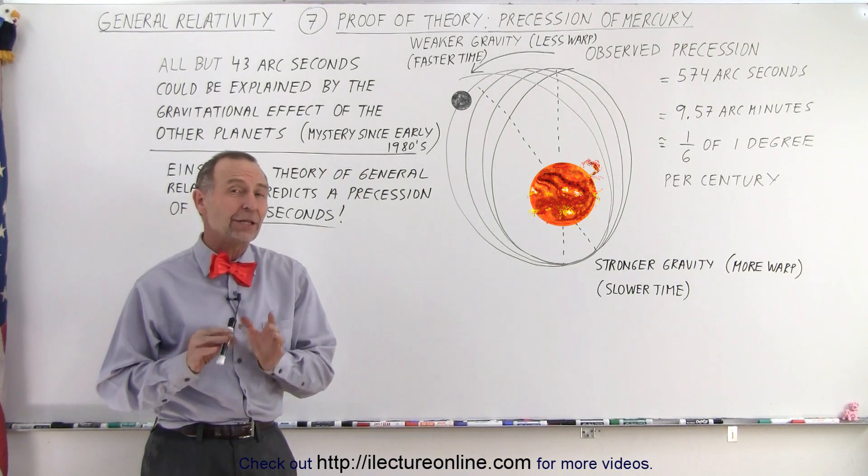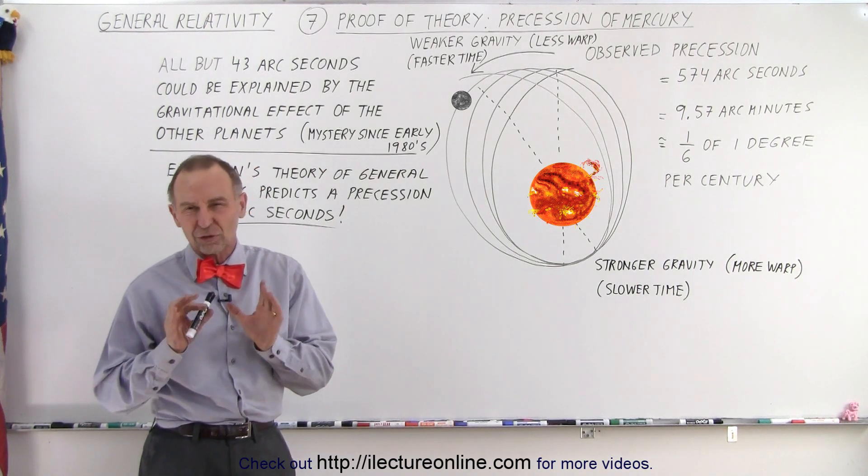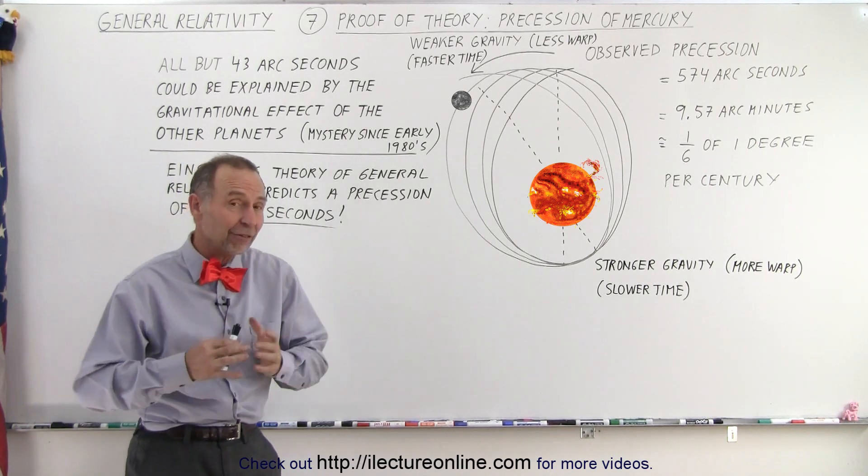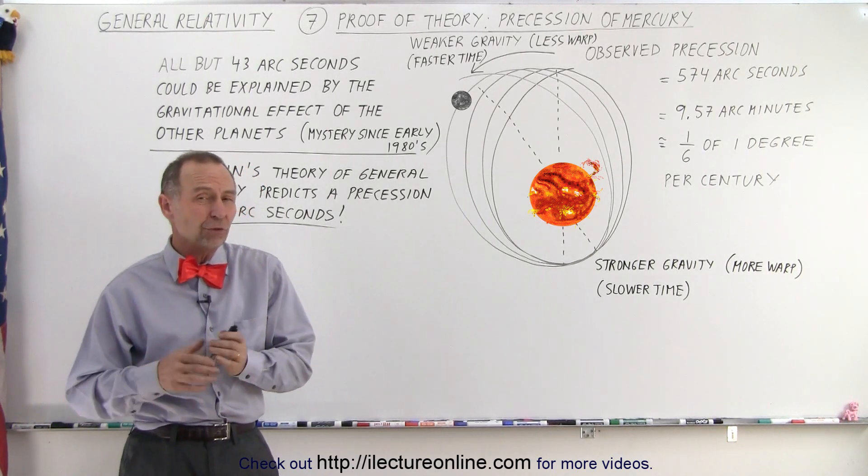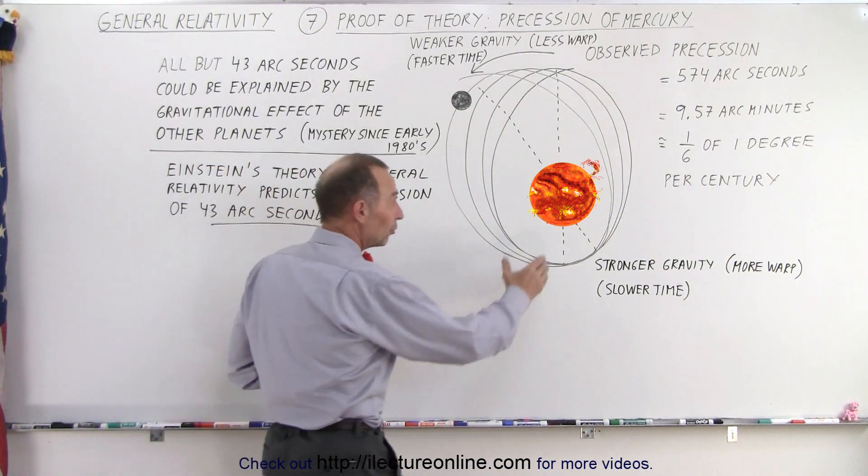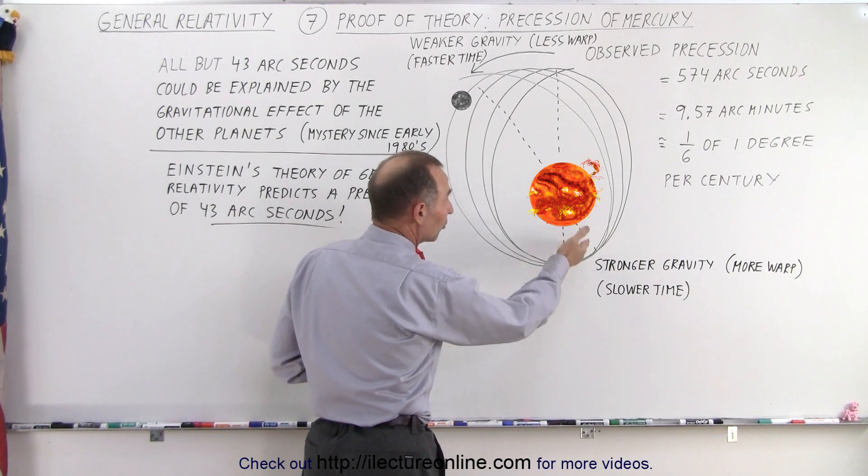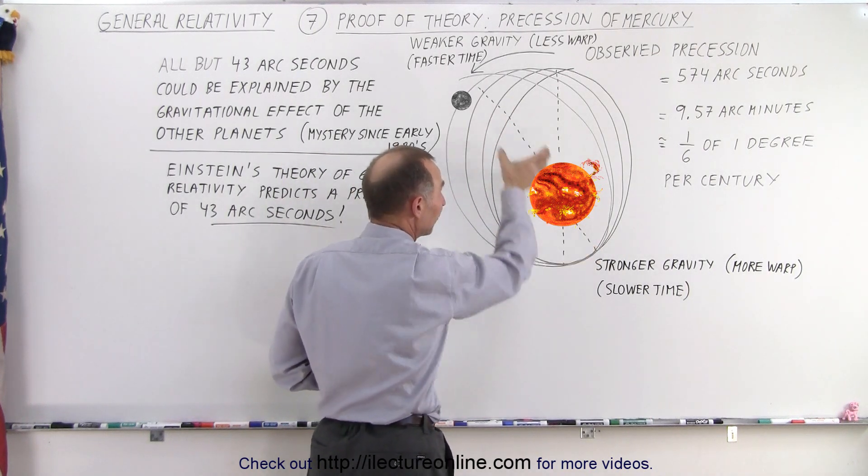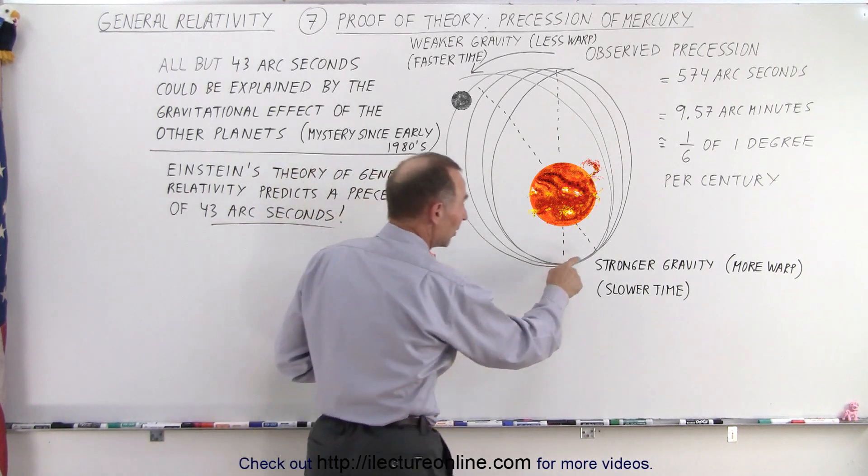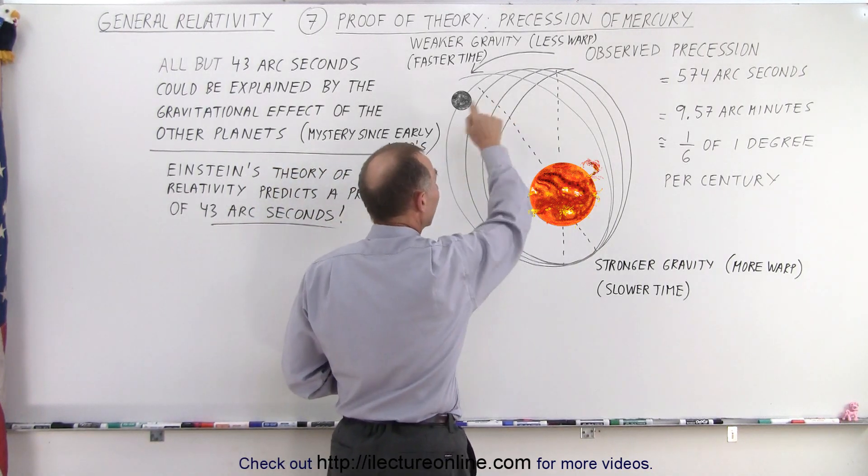Already back in the early 1800s, they knew there was something strange about Mercury's orbit. Mercury has a very eccentric orbit, almost 10% off from circular. When it's close to the Sun, it is much closer than when it's far away. There's a huge difference in the distance from Mercury to the Sun when it's at its perihelion versus aphelion.